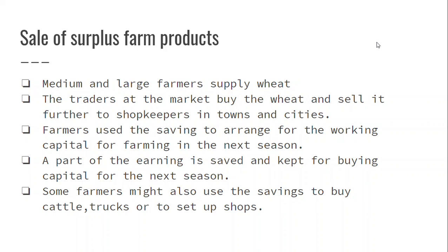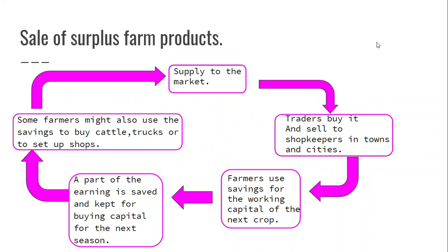This is an important supply chain, and it's better explained as a flowchart. So the crop is grown and then it's supplied to the market — not the market where we go and buy, but a big wholesale market where traders buy from. These traders then go and sell it to shopkeepers in towns, cities, and villages. The farmers get money from the sale, and most of it they use for their family's food and other essentials. The remaining amount is kept as savings for the next crop — as working capital for the next season.